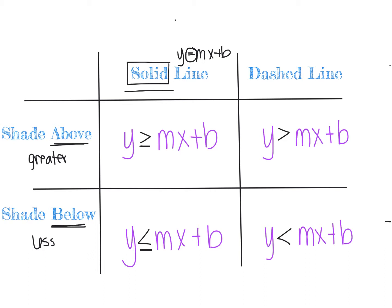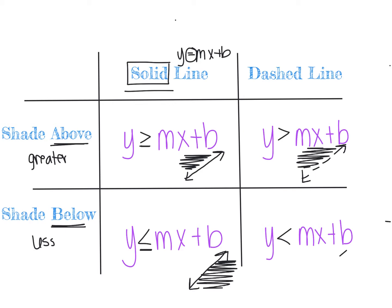To summarize the four cases: greater than or equal to gives a solid line with shading above; less than or equal to gives a solid line with shading below. Greater than (no equal to) gives a dashed boundary line with shading above; less than gives a dashed line with shading below.